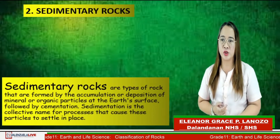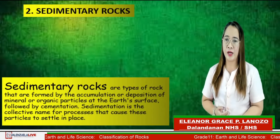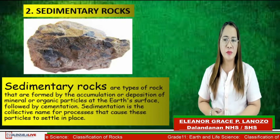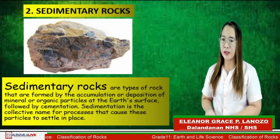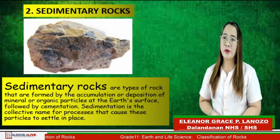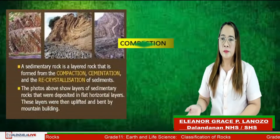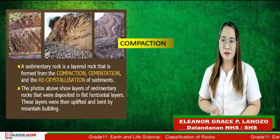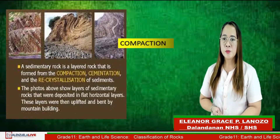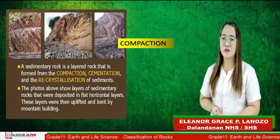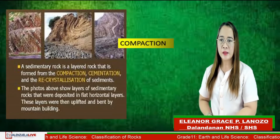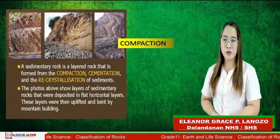The second type is sedimentary rock, which is formed by accumulation or deposition of mineral or organic particles, followed by cementation. Sedimentation is the collective term for processes that cause these particles to settle in place. Sedimentary rock is a layered rock formed from compaction, cementation, and crystallization of sediment. These layers were deposited in flat horizontal layers, then uplifted and bent by mountain building.